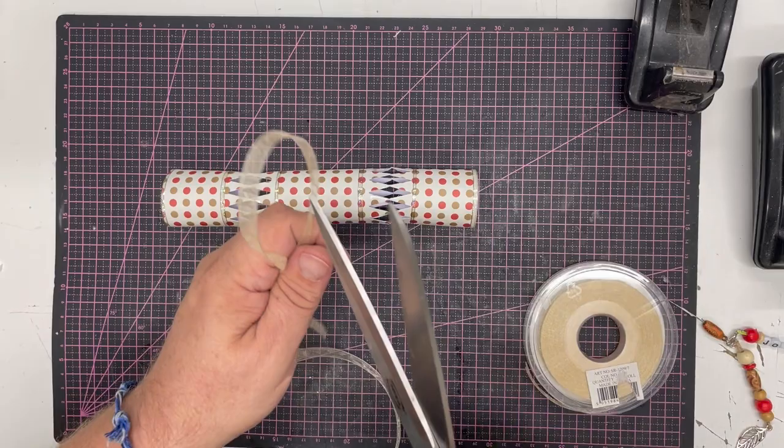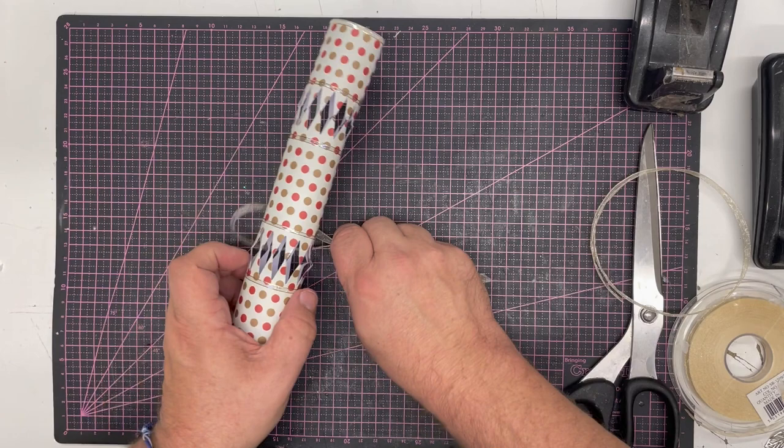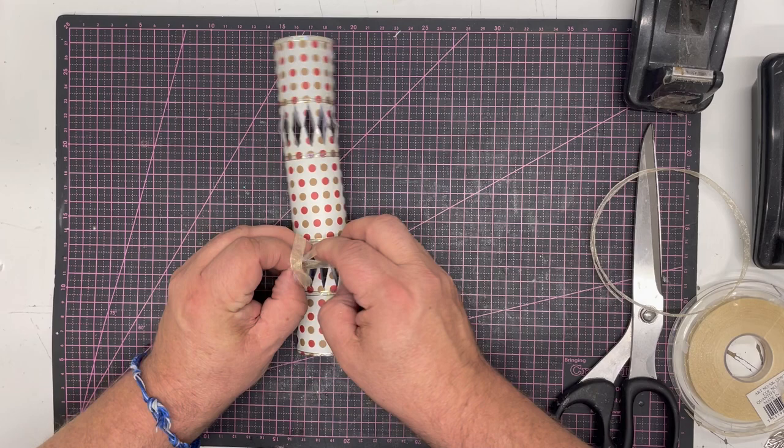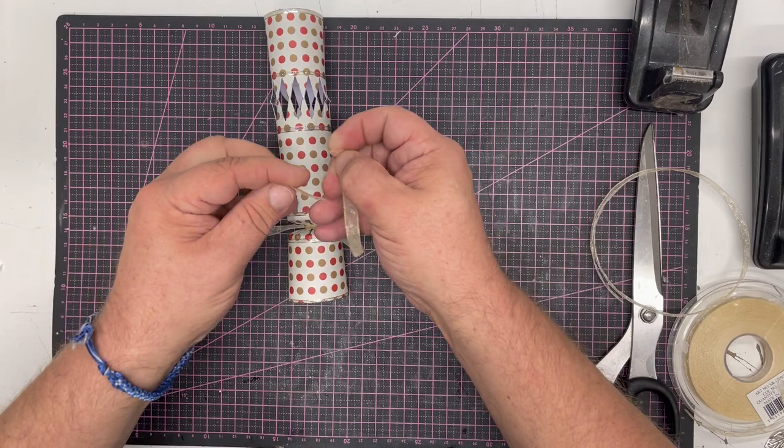I'm going to make a loop and pass that under the cracker, take the two ends and thread them through the loop and pull. It pulls the cracker together, then all you have to do is put a simple knot in and it's fixed.